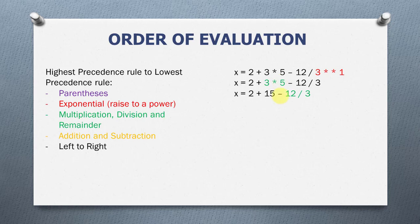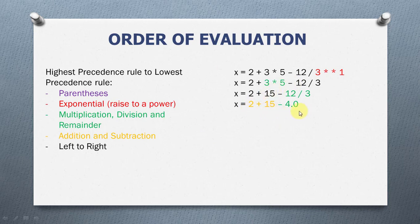3 times 5 is going to give us 15, so we can divide now. 12 divided by 3 is going to give us 4.0. Remember, we use the single forward slash for floating point division. Therefore, our result will always be a float even if we are dividing two integers. We now have the addition and subtraction operator and they have the same level of precedence. Addition comes first because moving from left to right, the addition operator comes first. So, 2 plus 15 is going to give us 17. And 17 minus 4.0 will result in 13.0. Python is going to store our result 13.0 in the variable x.